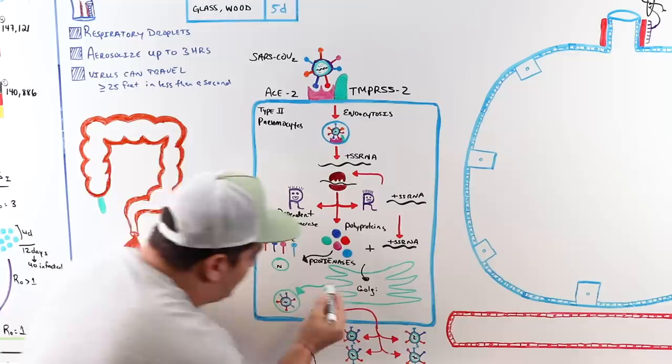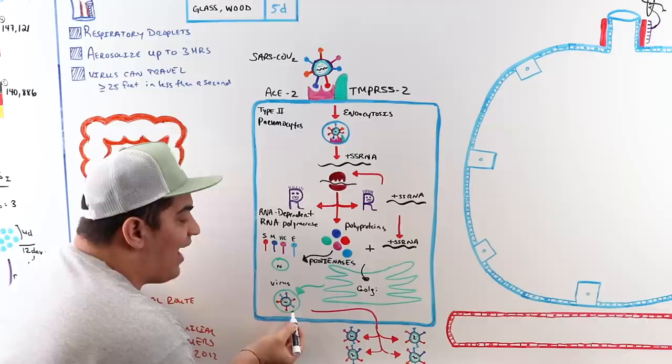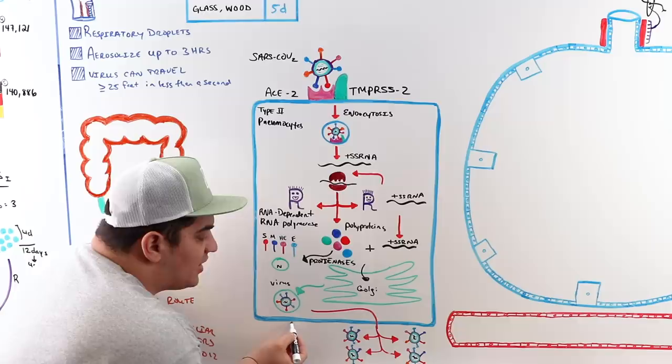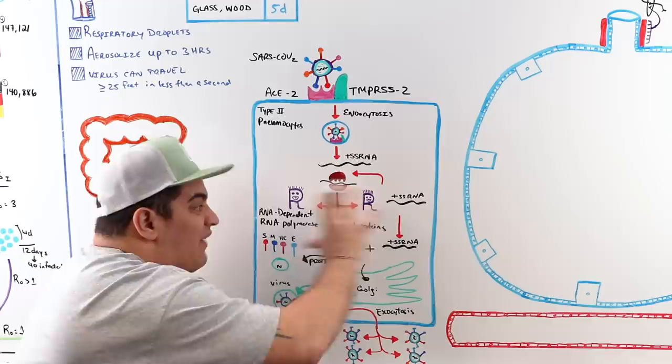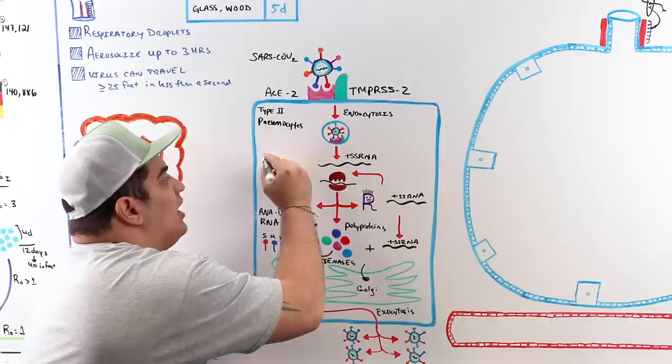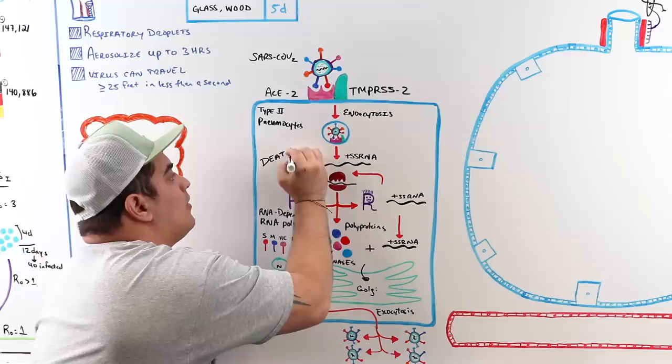The ssRNA combines with these structural proteins and is transported to the Golgi apparatus, where everything is packaged into a vesicle and reassembled into a new virus. Via exocytosis, the new virus is released from the cell — but this process eventually causes cell death.